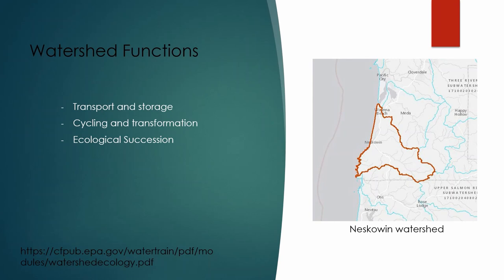For this next section, part two of what is a watershed, we're going to discuss some watershed functions. I simplified it down into three main topics: transport and storage, cycling and transformation, and ecological succession. I got a lot of this information from an EPA watershed training module — the link is there at the bottom. If you're interested, there's a lot more information on that website, and it's really accessible, so I'd recommend checking it out.